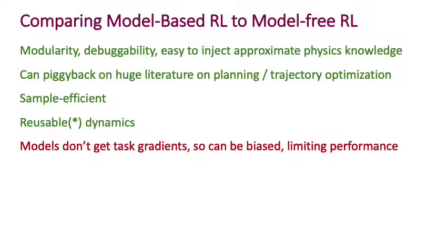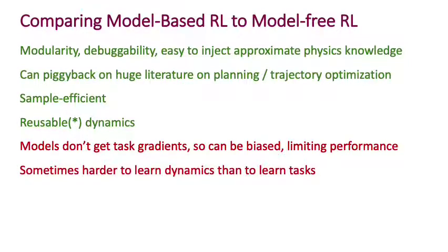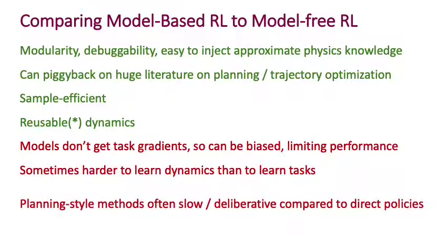Now, among the negatives of model-based RL is that the models are trained kind of independently of the task. And so you don't directly get task gradients into the dynamics models. And so this can lead to biased models that limit performance. And also sometimes it's actually harder to learn the dynamics than to learn tasks. So for example, if you're trying to learn to swim in a river that is fast flowing, the dynamics of that river are probably harder than to learn that you should move your hands in a particular way. And so it might in some cases not be worthwhile to try to learn the dynamics exactly. And finally, there's also a problem with some kinds of model-based RL approaches. The ones that use planning, purely planning for selecting actions, planning can often be quite slow or deliberative compared to direct policies like the ones that we were learning with Q-learning or even with direct policy search.